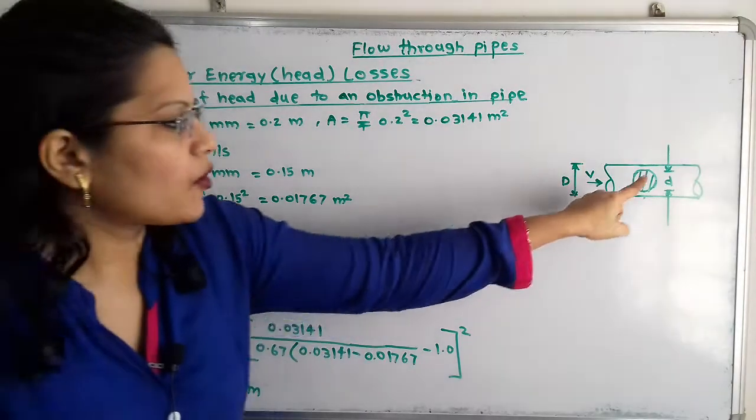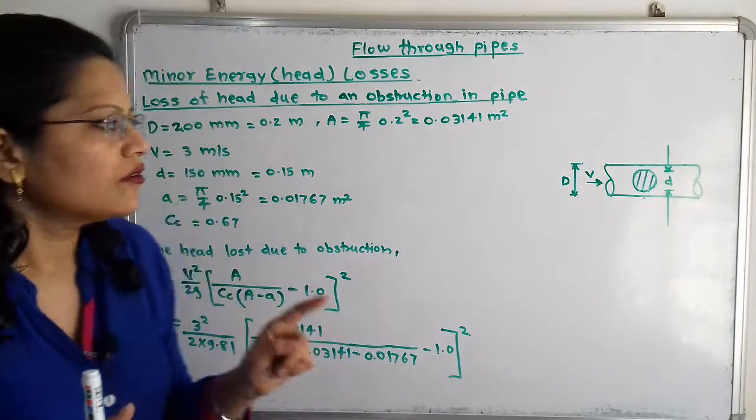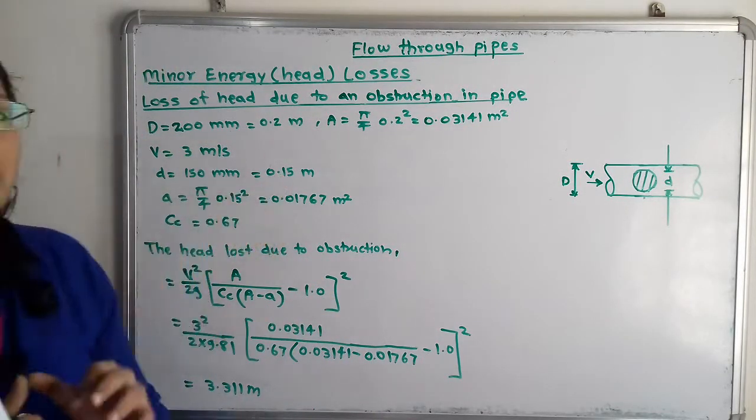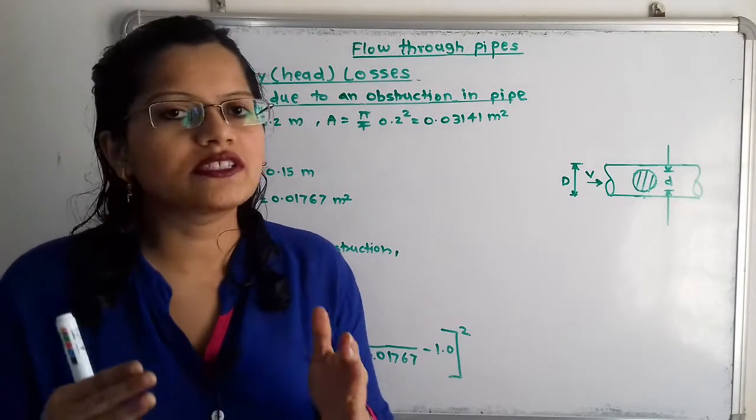Now the diameter of obstruction is given because it is a circular plate. The diameter d is 150 millimeters, that is 0.15 meters, and we have to also find out its area.